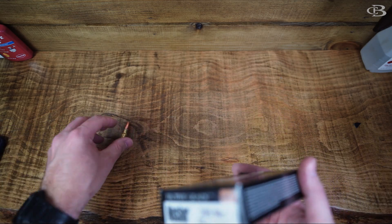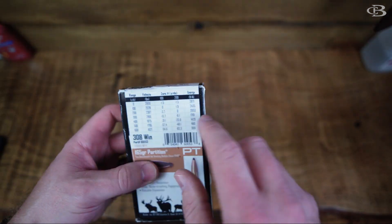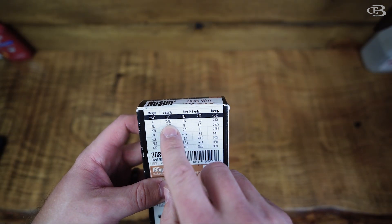So let's talk about this. This Nosler Partition is 165 grain. And as we can see from the box here, it's coming out at 2,800 feet per second.